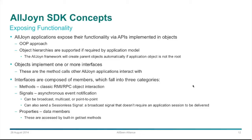Interfaces contain methods, signals, and properties. Methods are RMI or RPC communications — one-to-one remote method invocations with a reply. Signals are asynchronous broadcasts, sent one-to-many or one-to-one. Properties are built-in get and set methods on data members, with a get-all-properties call to retrieve all details in one request. Another important feature is introspection — the ability to ask a device at runtime what its capabilities are, get back a list of supported interfaces, create objects, and start calling methods on them.